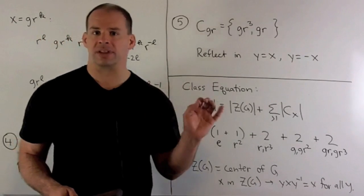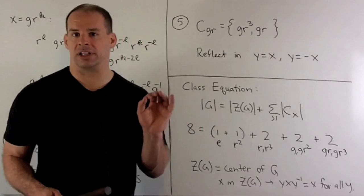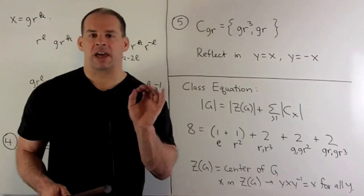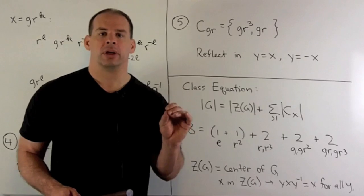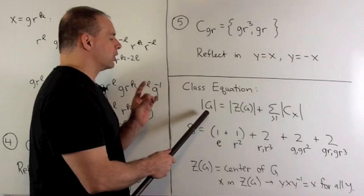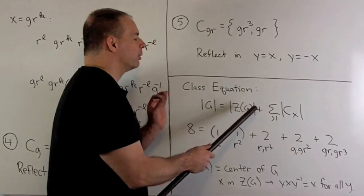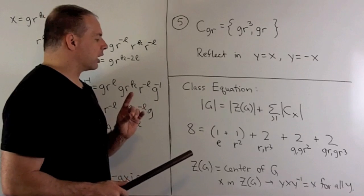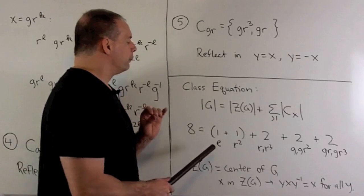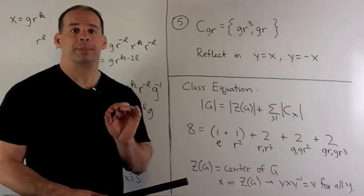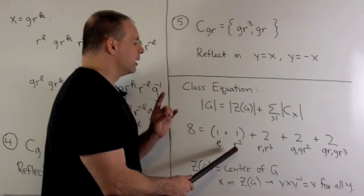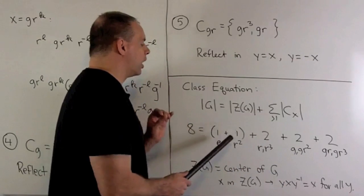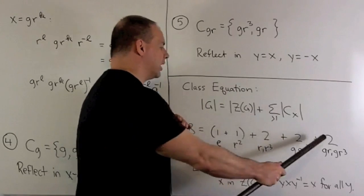There are no elements left, so that covers all conjugacy classes. Now the class equation says the conjugacy classes partition our group. That says the order of the group is going to be equal to the order of the center plus the sum of the orders for the classes with more than one element. So if we take a look: for the classes with exactly one element, we'll have E and R squared. Then the remaining classes have two elements each. So we have eight equals one plus one plus two plus two plus two — the class equation holds.